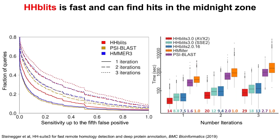One method that is fairly popular for profile-profile searches is HHBlits. There is a sensitivity plot on the left and a speed plot on the right comparing HHBlits to PsiBlast and HMMER. HHBlits is a bit more sensitive than PsiBlast and HMMER, and what really matters for metagenomic annotation is the first iteration — you have to be very sensitive in the first iteration. If you don't find any hits in the first iteration, the second and third iterations don't help you anymore.